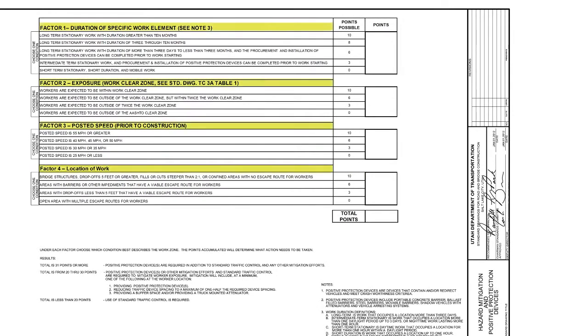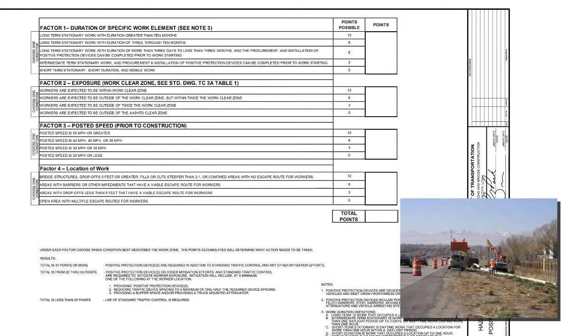This table has four factors that you need to consider. Under each factor, choose which condition best describes the work zone. The points accumulated will determine what action needs to be taken. Take a look at the photograph on the lower right-hand side. Let's say the contractor will finish the wall in this location within two months. In this instance, what condition would you choose? Long-term stationary for six points.